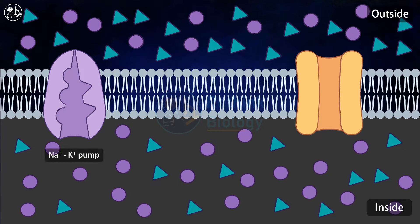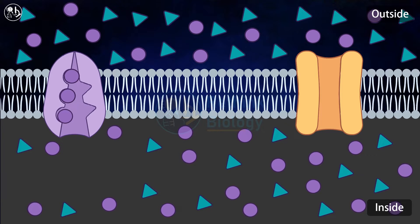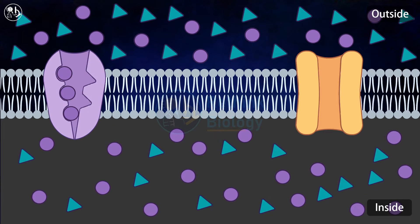Sodium-potassium pumps and potassium leaky channels. The sodium-potassium pump sends three sodium ions outside and in exchange brings two potassium ions inside.